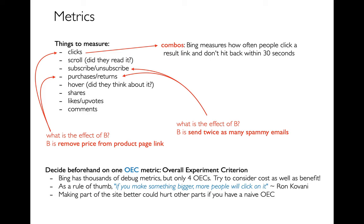Another lesson from Trovani is that if you make something bigger, people will click on it — that's not surprising — but there's a cost. I can only fit so many things on the page. Sure, if I make a search result bigger, people will click on it, but they won't click on other things. So you have to think carefully not just about the benefit you're trying to measure, but about the cost. Maybe I can do something like divide click-through rate by the number of pixels on the screen I'm actually using.